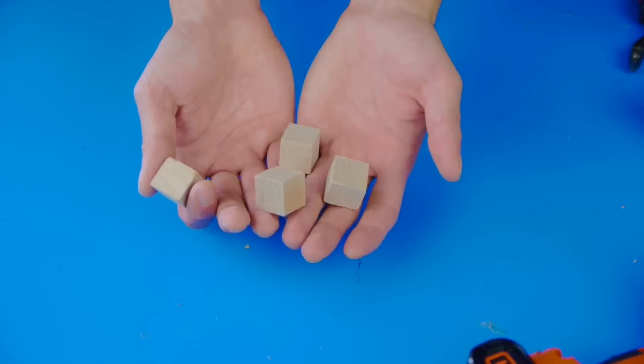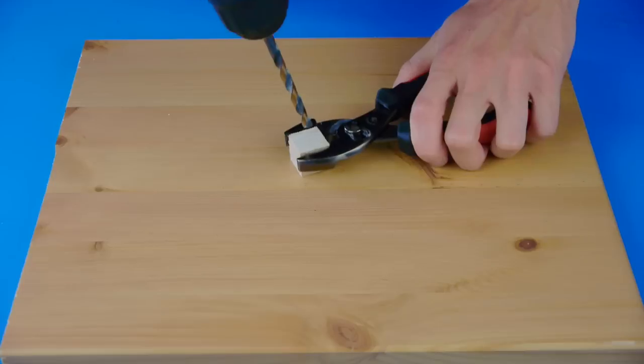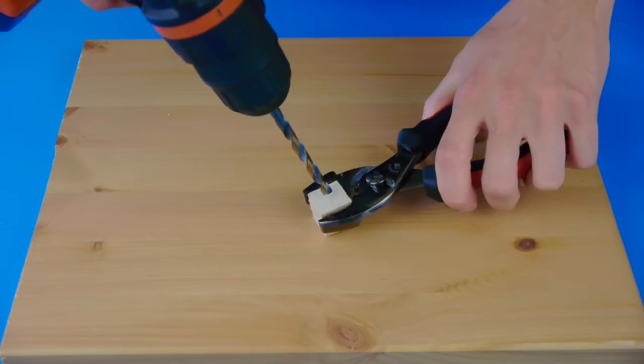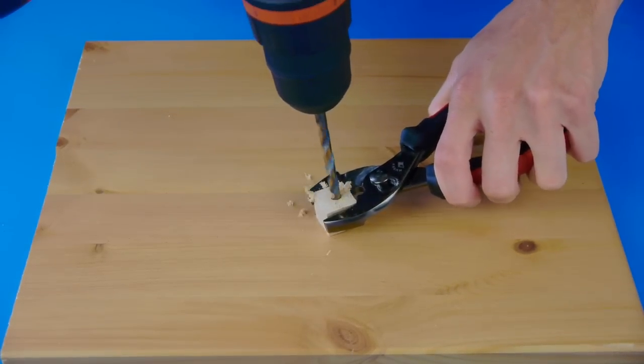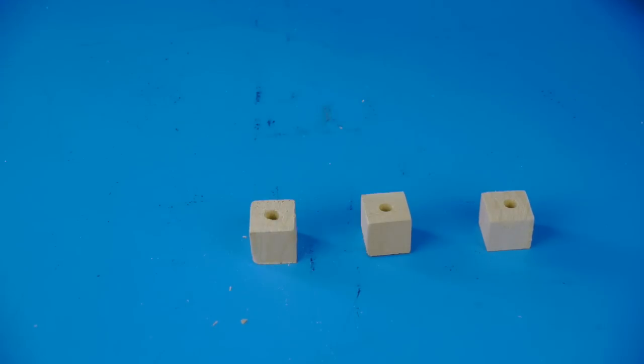Cut four cubes from the square dowel with the saw, and then with a pair of pliers, hold the cube and drill a hole that's slightly larger than a quarter of an inch. Drill holes like this into all four cubes.